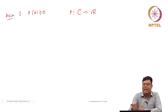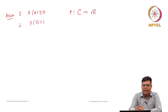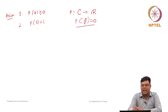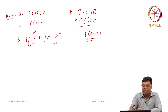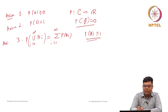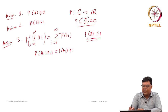Axiom 1 says P(A) is greater than or equal to 0 — it is a positive real number including 0. Axiom 2 says P(S) is equal to 1. For the impossible event, P(φ) is 0, but we did not mention that in the axiom. We mentioned P(A) ≥ 0, but P(A) ≤ 1 we did not mention in the axioms. Axiom 3 says the probability of the union of A_i from i=1 to infinity is the sum of P(A_i), i=1 to infinity.